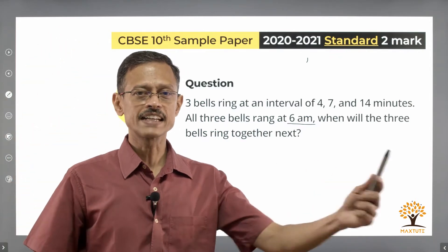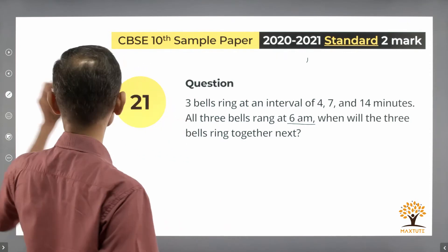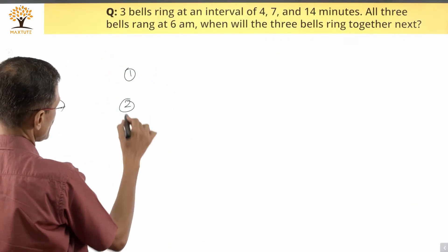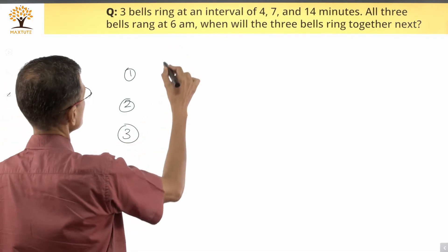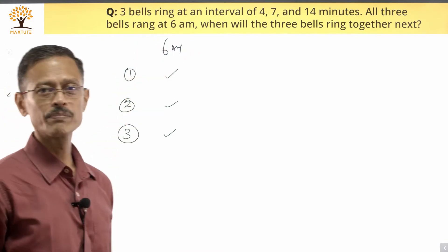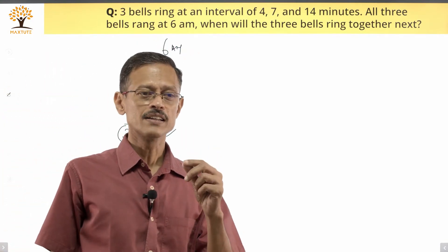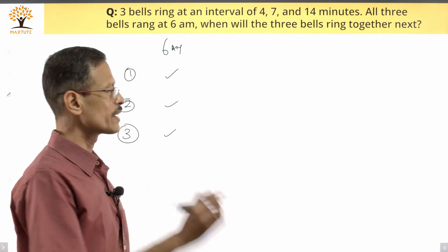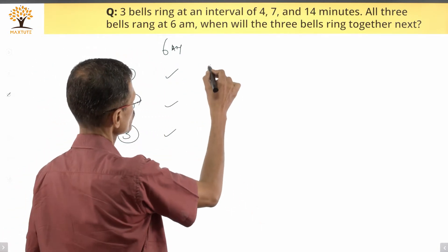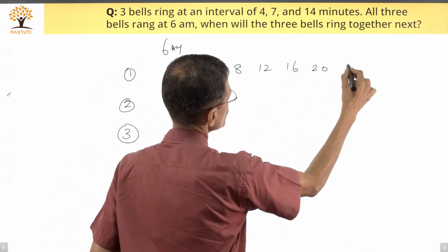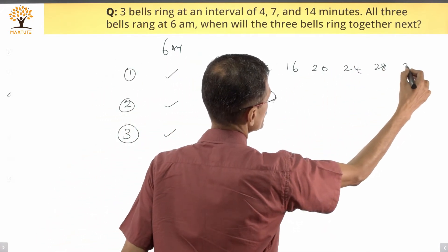I'm going to say this is bell number 1, 2, and 3. All three bells rang at 6 a.m., so let me put a tick mark here. The first bell is going to ring four minutes from then and every four minutes from then. The next time it's going to ring, I'm going to write the minute values around 6: 4, it'll ring 6:08, 6:12, 6:16, 6:20, 6:24, 6:28, 6:32 and so on.